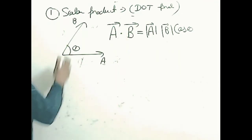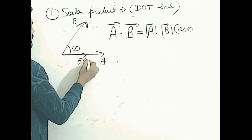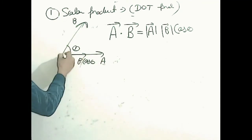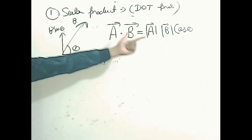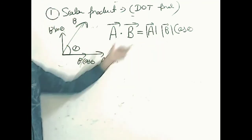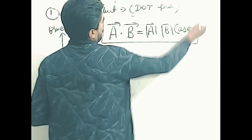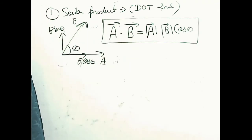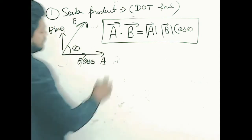In another way, you can write that the dot product equals one vector times the projection of the other vector onto it. The projection of vector B is B cos theta, and B sin theta is the vertical component. So the dot product equals the magnitude of one vector multiplied by the horizontal component — that is, the projection — of the other vector.